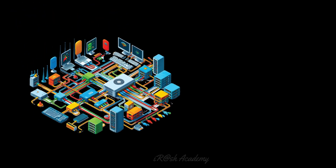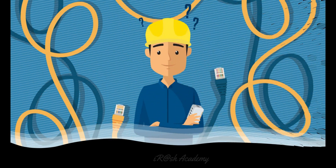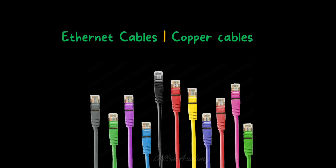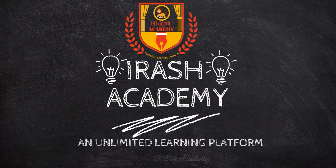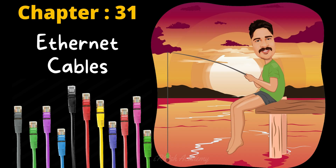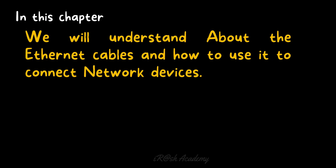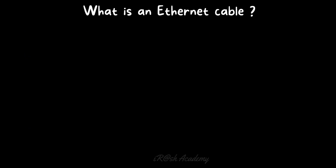When we talk about computer networks, the first thing coming into our mind is cables. Even though wireless networks are very popular nowadays, we cannot imagine a network without cables. In this chapter, we are going to discuss about ethernet cables or copper cables. Welcome to CCNA 200-301: Implementing and Administering Cisco Solutions, Chapter 31 - Ethernet Cable or the Copper Cable. In this chapter we will understand about ethernet cables and how to use them to connect network devices, and also we will discuss about different wiring methods and standards of ethernet cables.